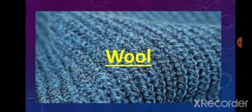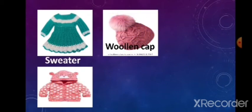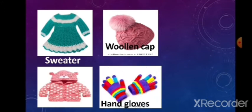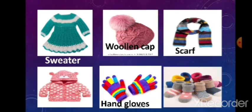The next type of fabric is wool. Children, first tell me when we wear woolen clothes. Yes, we wear woolen clothes in the winter season. Woolen clothes keep us warm. Where do we get wool from? We get wool from sheep. Let's see some pictures of woolen clothes: sweater, woolen cap, hand gloves, scarf, and woolen socks.